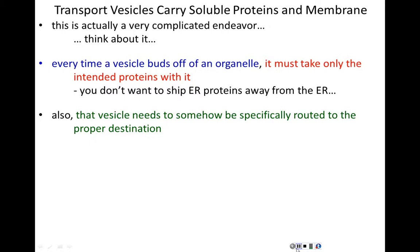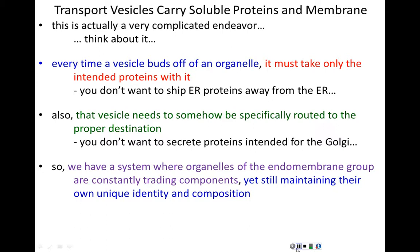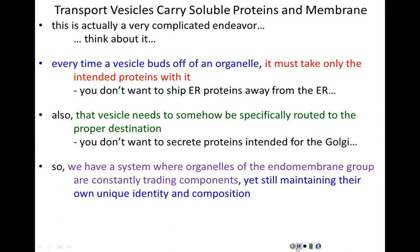The second challenge is that vesicles need to be specifically sent to their proper destination. There are so many different organelles to fuse with. How does a particular vesicle only go to its proper destination? You don't want to take vesicles full of proteins intended for the Golgi and instead send them to the cellular membrane. We have a system where organelles of the endomembrane system are constantly trading components, yet somehow each of these organelles maintains its own unique identity and composition.